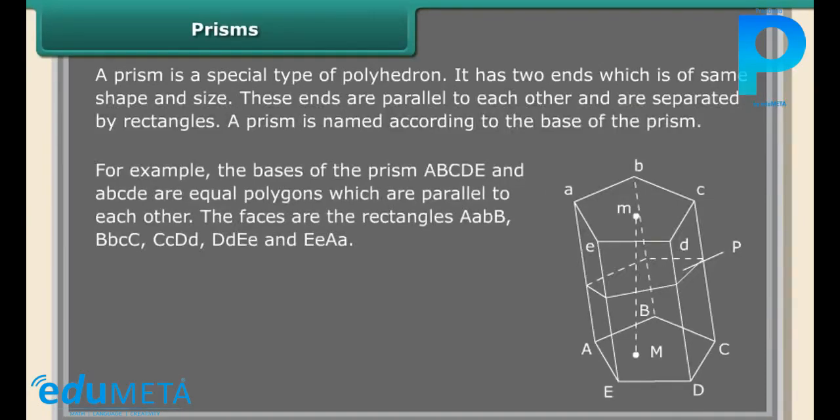The faces are the rectangles AaBb, BbCc, CcDd, DdEe, and EeAa. Aa, Bb, Cc, etc. are called lateral edges.